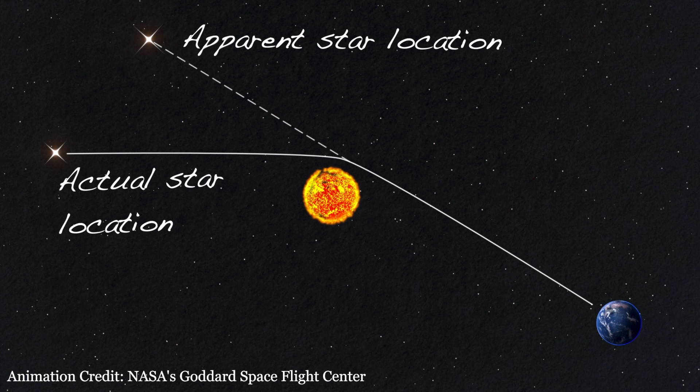Thus, when the path of the star's light passes near the Sun and is redirected due to the Sun's gravity, it appears to be at a different location, and it is easy to observe this during a total solar eclipse.